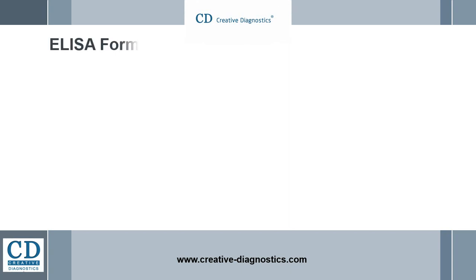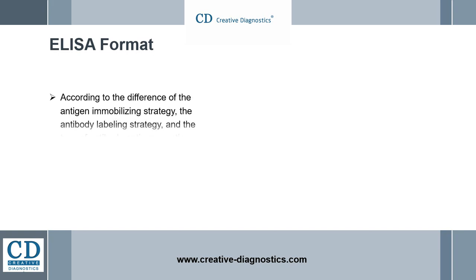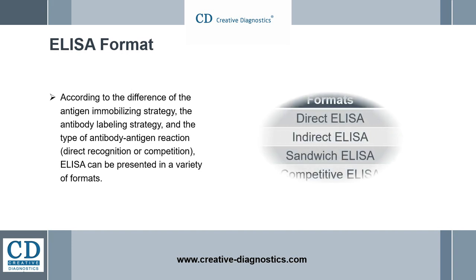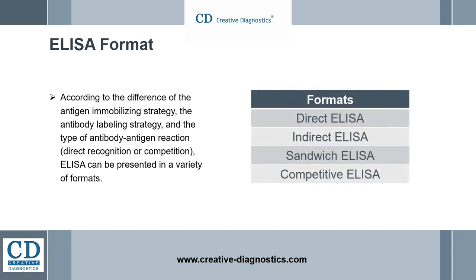ELISA Format. According to the difference of the antigen-immobilizing strategy, the antibody-labeling strategy, and the type of antibody-antigen reaction — direct recognition or competition — ELISA can be presented in a variety of formats, namely direct ELISA, indirect ELISA, sandwich ELISA, and competitive ELISA. Each has its own advantages and disadvantages, and one can choose an optimal ELISA format flexibly according to the requirements.